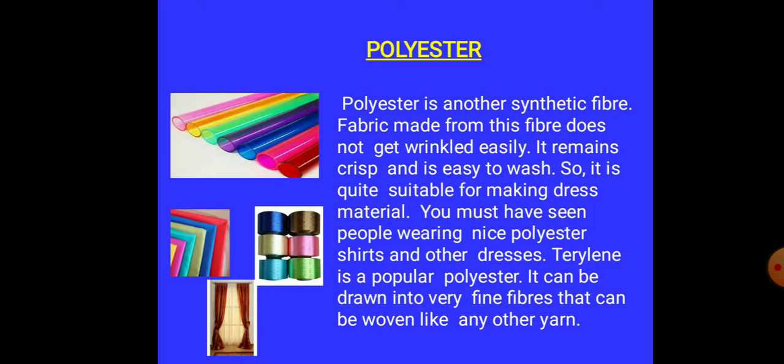Polyester is another man-made fiber and it is made up of ethyl monomers. Ethyl we are getting from petrol. The main compounds are air, water, coal, and petrol. From petrol we can make polyester. Fabric made from this fiber does not wrinkle easily. It remains crisp and is easy to wash, so it is quite suitable for making dress material. You must have seen people wearing nice polyester shirts and other dresses.